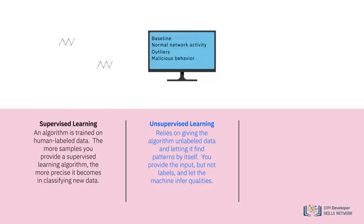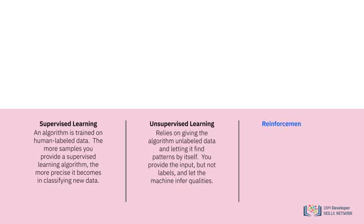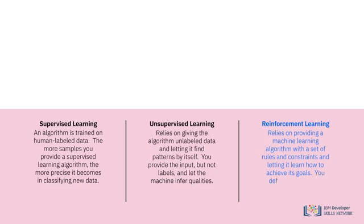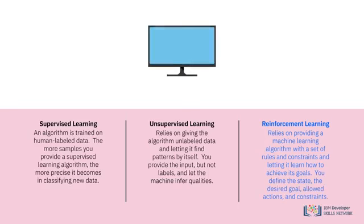The third type of machine learning algorithm, reinforcement learning, relies on providing a machine learning algorithm with a set of rules and constraints and letting it learn how to achieve its goals. You define the state, the desired goal, allowed actions, and constraints. The algorithm figures out how to achieve the goal by trying different combinations of allowed actions and is rewarded or punished depending on whether the decision was a good one. The algorithm tries its best to maximize its rewards within the constraints provided. You could use reinforcement learning to teach a machine to play chess or navigate an obstacle course.